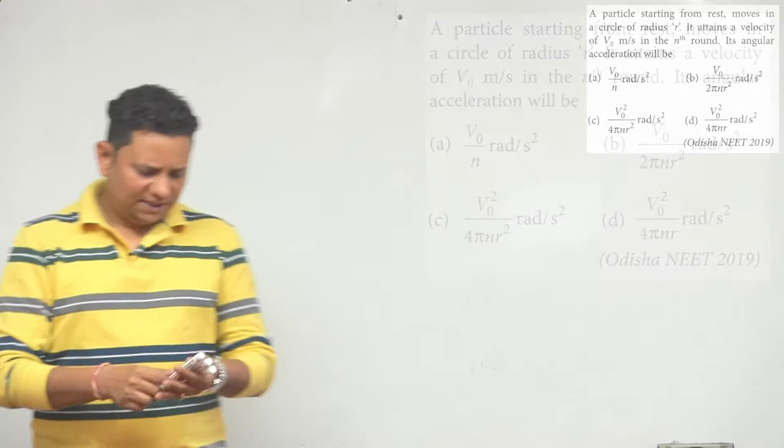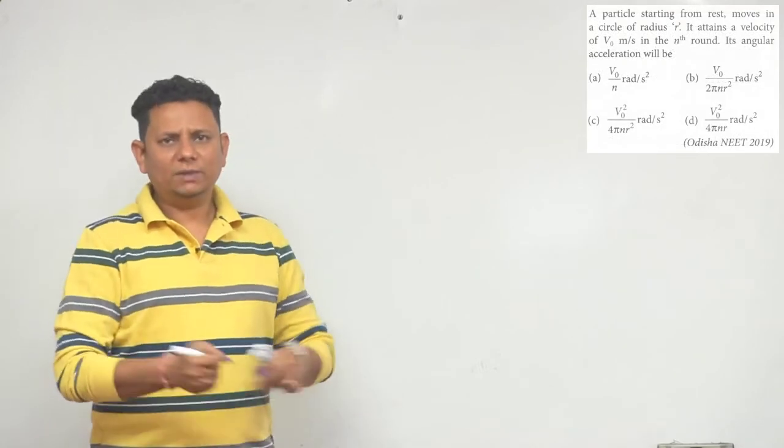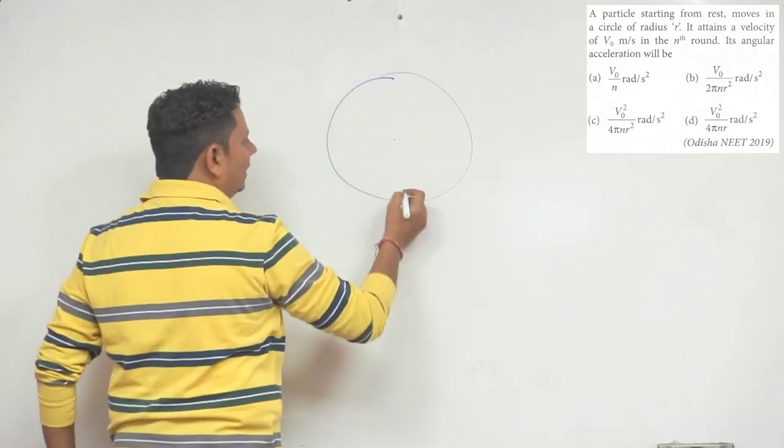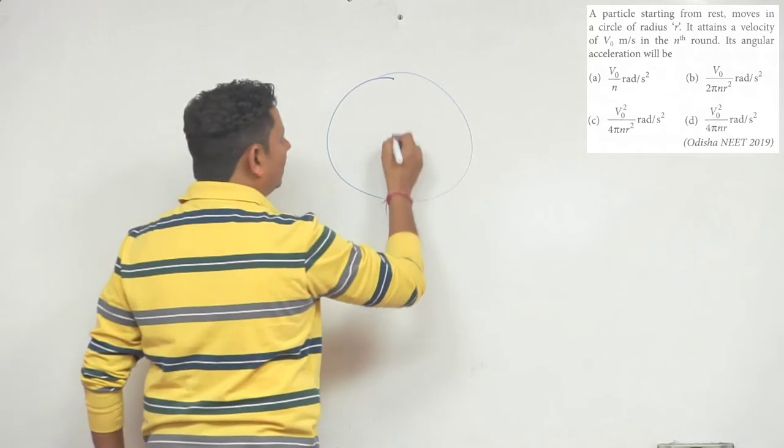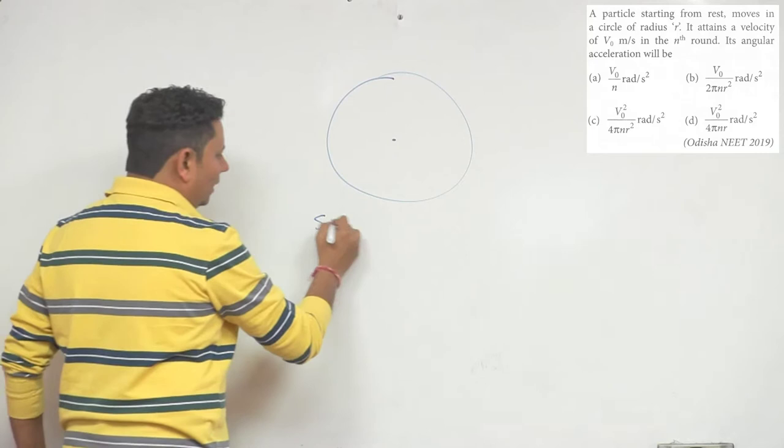In this case, the particle is given in circular motion. Let's say after n rounds, the displacement will be 2πr multiplied by n. This will be the distance traveled.